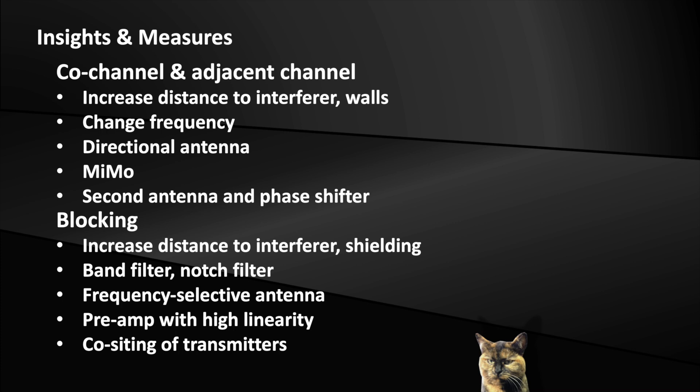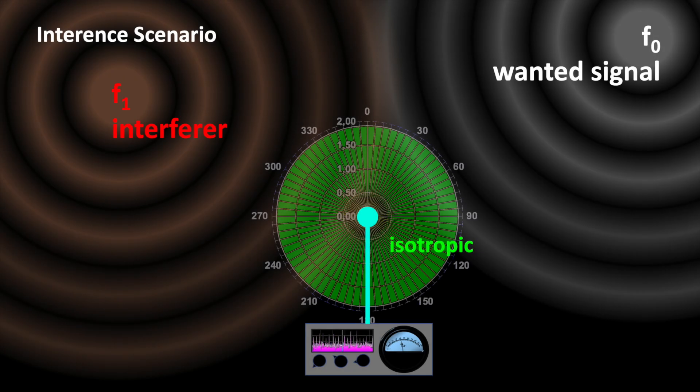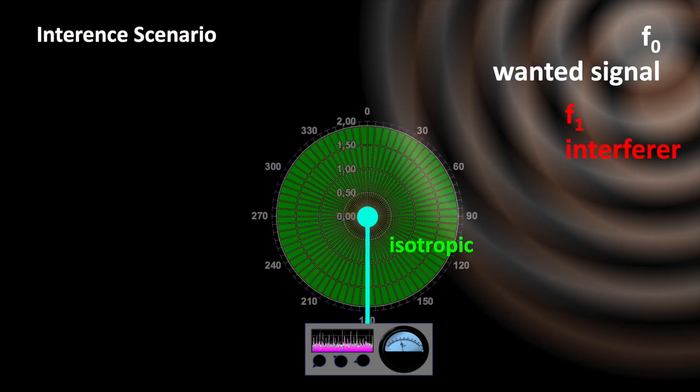Band and notch filters, frequency-selective antennas or a pre-amplifier that can handle a higher input signal are enhancing blocking resilience. Co-siting of the transmitters can be an interesting option, because when you are getting closer to the source of interference, this ensures at the same time a strong wanted signal. Thus, sensitivity reduction caused by receiver blocking has no effect.